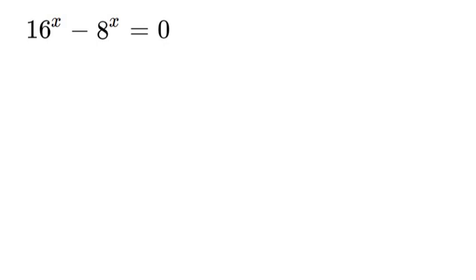So the first thing we're gonna do here is we're gonna rewrite 16 and 8 as 2 to their respective powers. So 16 will be turned into 2 to the power 4 and that'll be to the power of x, and then we got minus 2 to the power of 3 for 8 to the power of x is equal to 0.